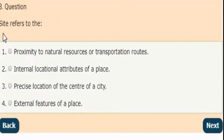Next question: site refers to which of the following? Options are: proximity to natural resources or transportation routes; second, internal locational attributes of a place; third, precise location of the center of a city; fourth option, external features of a place. The correct answer is option 2. Internal locational attributes of a place.